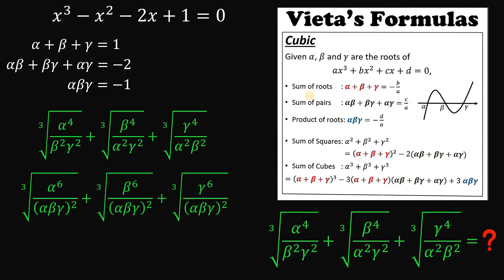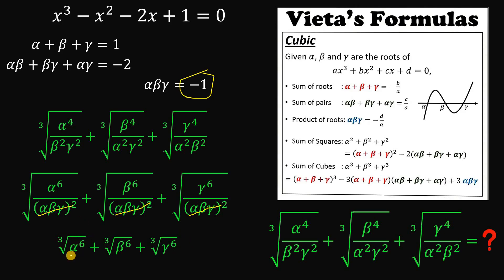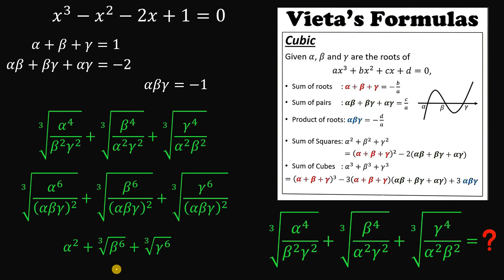The reason for this manipulation is that we know the product alpha·beta·gamma from Vieta's formula — it is negative 1. So alpha squared·beta squared·gamma squared equals (alpha·beta·gamma) squared equals (negative 1) squared equals positive 1. Therefore all three denominators equal 1, and our expression simplifies to: cube root of alpha to the 6th, plus cube root of beta to the 6th, plus cube root of gamma to the 6th. Simplifying further, cube root of alpha to the 6th is alpha squared, cube root of beta to the 6th is beta squared, and cube root of gamma to the 6th is gamma squared.